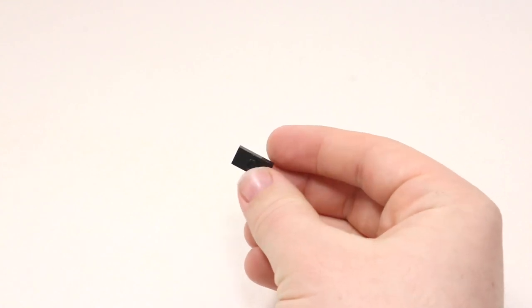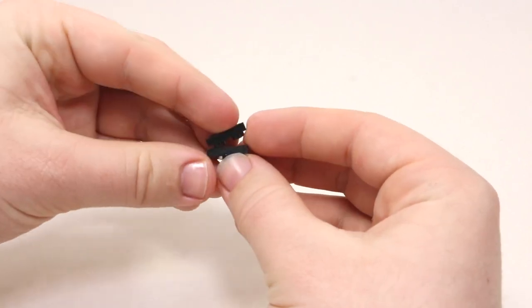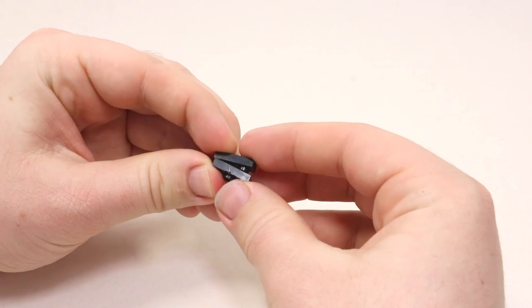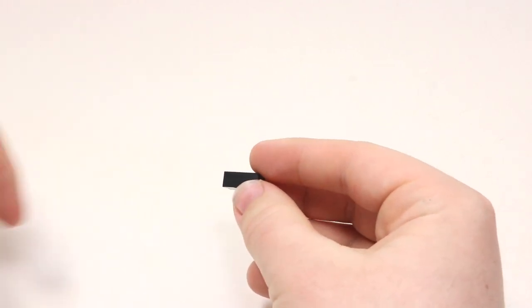You're going to want to start with this 1x2 jumper plate. Turn it upside down and add a 1x2 plate on top of that. From there, you're going to take this piece here,